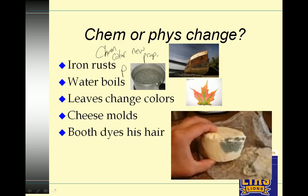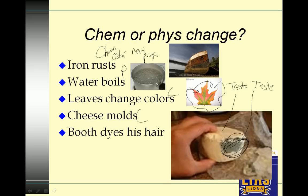Leaves change colors is a chemical change. The properties of a dead leaf that is brown or red is different from a living leaf that is green. Cheese molds — that is a chemical change too. The moldy cheese and the non-moldy cheese don't taste the same, so you've made something new. If you dye your hair, that's just coloring, so that's a physical change. Rain falls is a physical change: starts as H2O, ends as H2O.